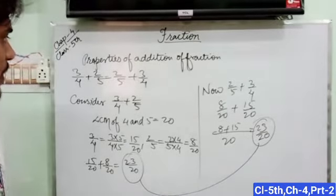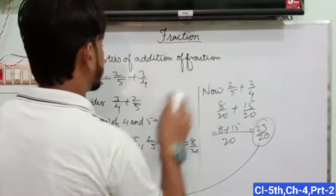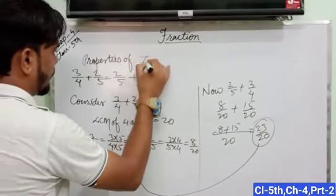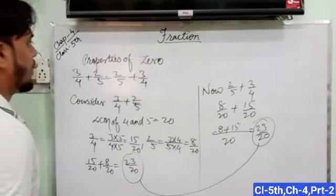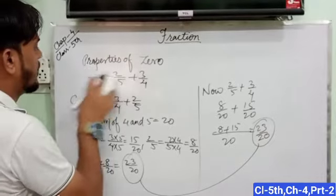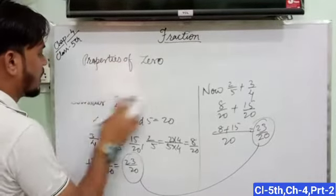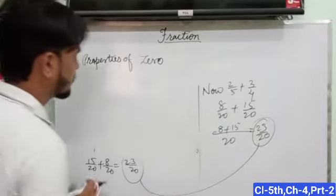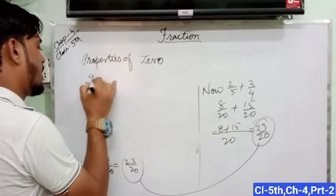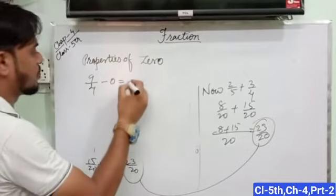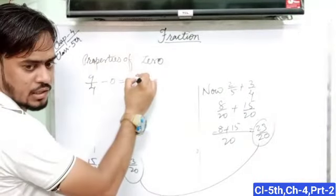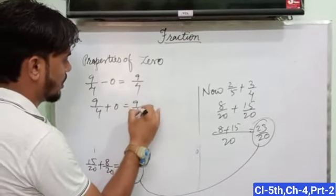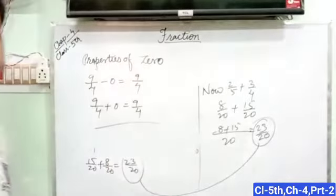The next property is the property of 0. When we add or subtract 0 in any fraction, there will be no change in your fraction. See here, 9 upon 4 minus 0 is equal to 9 upon 4. And 9 upon 4 plus 0 is equal to also 9 upon 4.